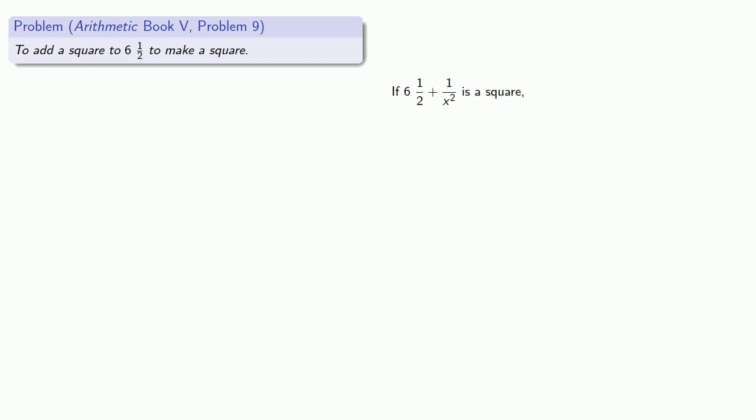In recognition of our goal of making our result as close to 6 and a half as possible, we'll let our square be 1 over x squared. So we want 6 and a half plus 1 over x squared to be a square. Now this does require us to deal with rational expressions, so Diophantus goes to a sequence of manipulations. If 6 and a half plus 1 over x squared, then 4 times this amount, 26 plus 4 over x squared, will also be a square.